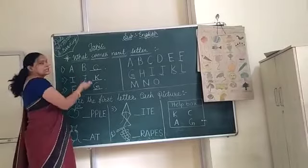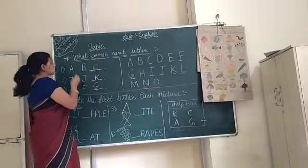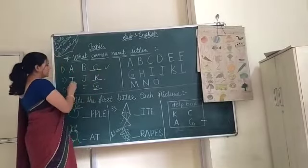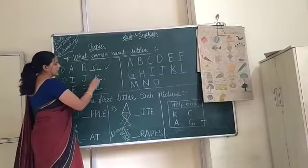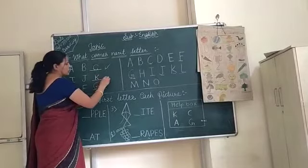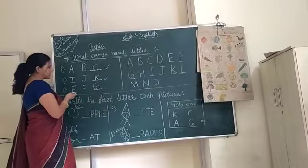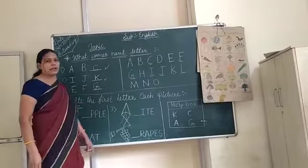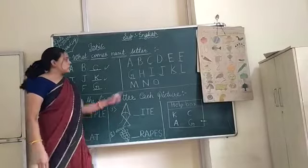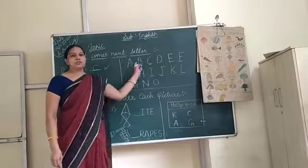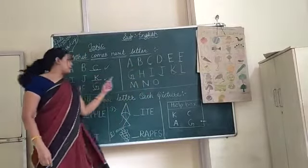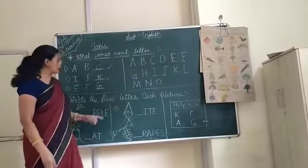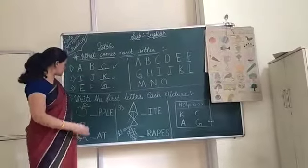So let us complete these lines. A, B, C — this is complete. I, J, K — this is also complete. And the next line is complete: E, F, G. So some letters are there — first we speak and then write the correct letter. The next line is also complete.